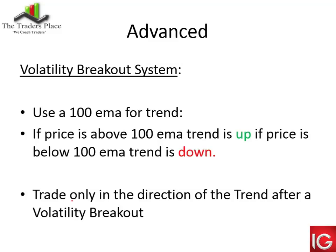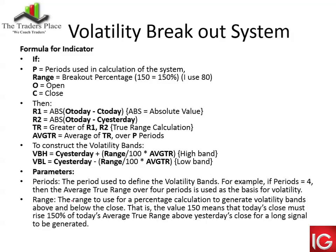Volatility — we all know or have heard of volatility, and markets are volatile. That's a very subjective thing. Volatility can be a big candle suddenly, or short sharp swings in the market. I reduce this down to one candle at a time. As with most of my work, I use a moving average to determine the trend — specifically a 100 exponential moving average. If price is above the 100 EMA, the trend is up; if below, the trend is down. We only trade the direction of the trend after a volatility breakout. You will need to know how to do some programming and have software that allows you to write indicators.